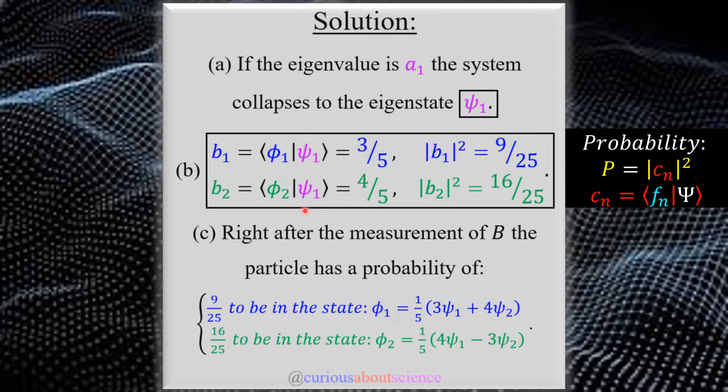Either way we go, we see that we end up with the coefficients of 3 fifths and 4 fifths, so square them. We get 9 over 25, 16 over 25, good to go. That one's not too bad. We just have to be careful here that we know that we are in the eigenstate of psi 1 whenever we apply this.